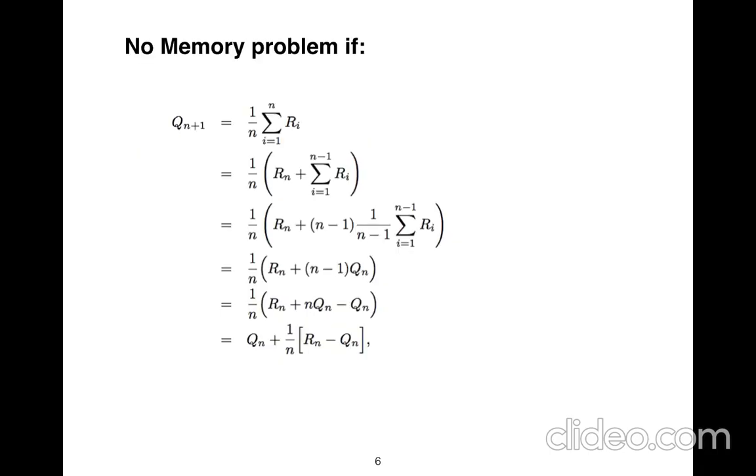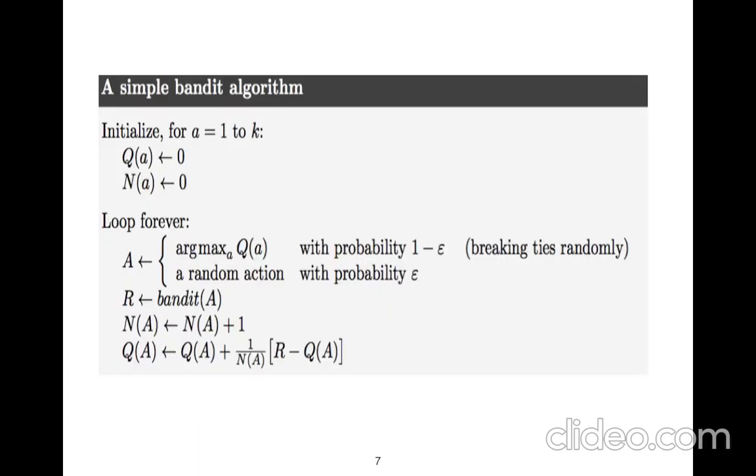So you have memory problem if you have several variables, but there is no memory problem if we just used reward and queue, just two variables to keep it in memory. So this is just a simple bandit algorithm.